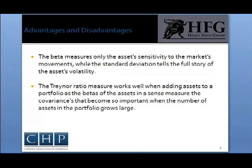The Treynor measure is strikingly similar to the Sharpe ratio, only this time the excess return of the asset is related to the beta and not the standard deviation of the assets. The beta measures only the asset's sensitivity to market movements, while the standard deviation tells the full story of the asset's volatility.